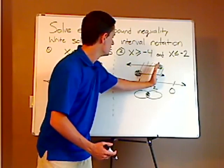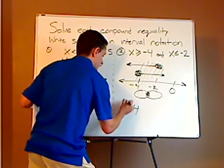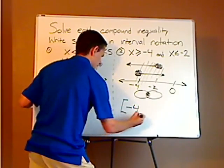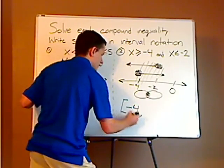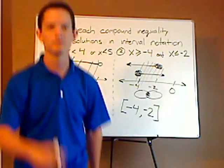So it's going to be from negative 4 to negative 2, and it's going to include, so that means it's going to be a bracket. So negative 4 to negative 2. And that's it.